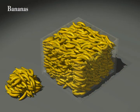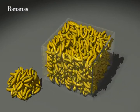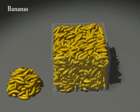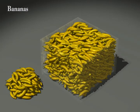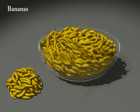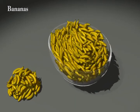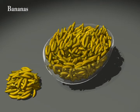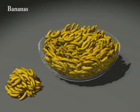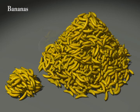From the same input exemplar, we can obtain different banana piles, such as within a box, a bowl, a dome shape, and a Gaussian shape respectively.